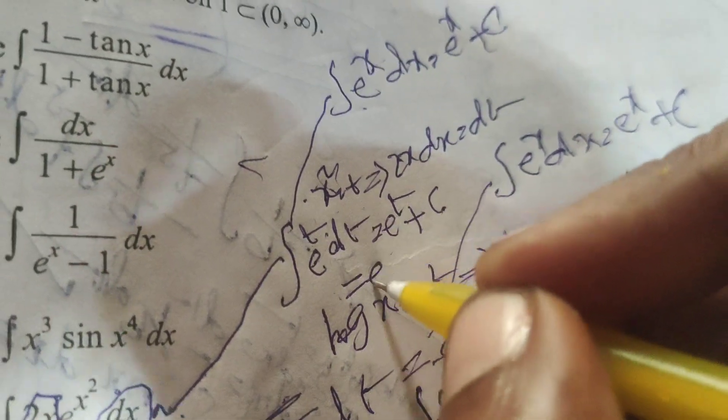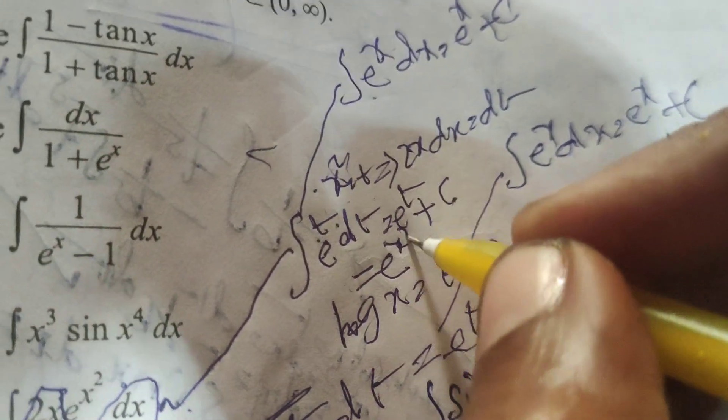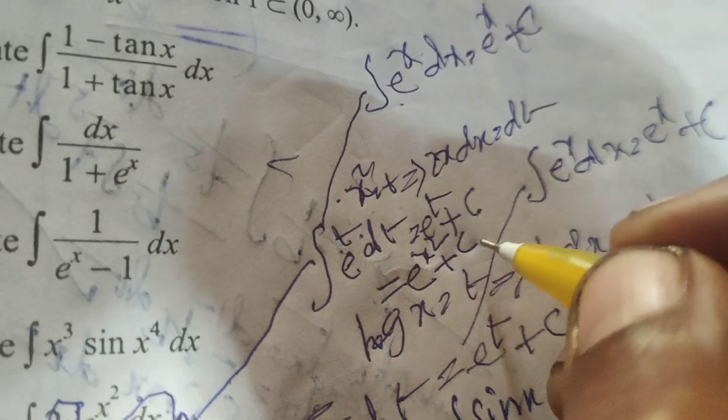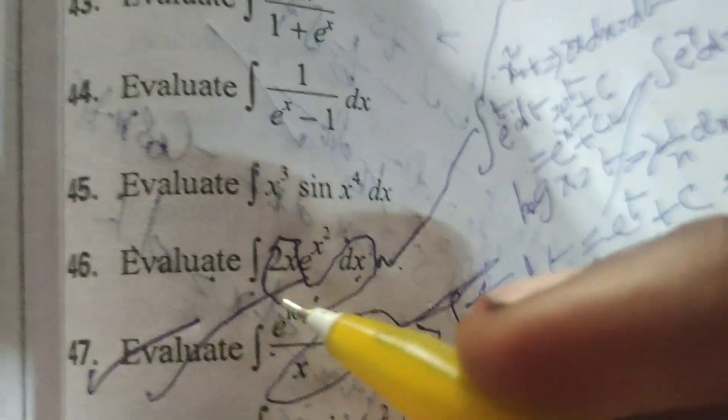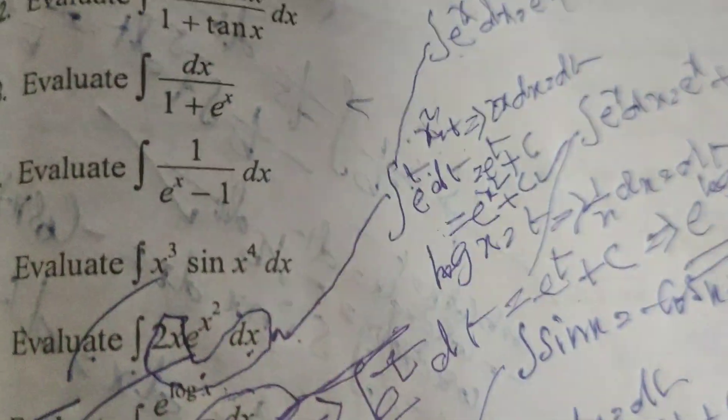e^t means our substitution x², so e^(x²) plus c. This is the solution to this evaluated integral problem. Thank you.